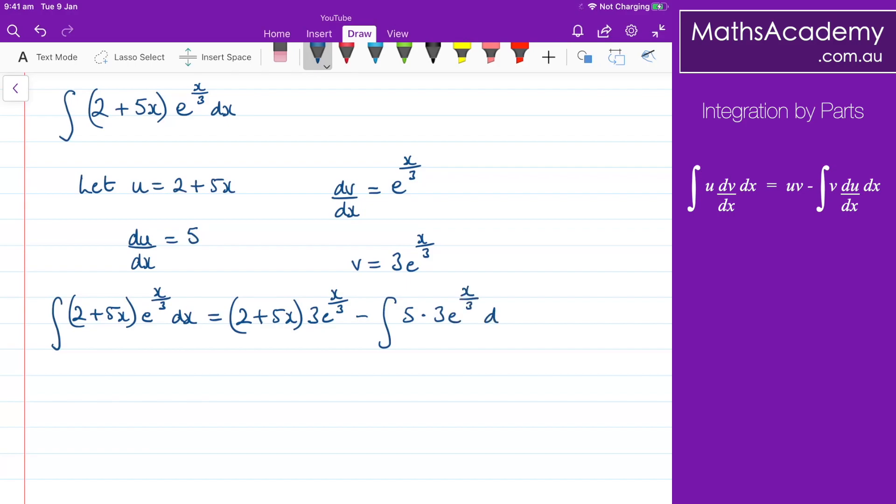So I've got (2 plus 5x)3e to the x over 3 minus, well, this 5 and 3 here will give me 15, so that's 15 times the integral of e to the x over 3. Well, the integral of e to the x over 3 is 3e to the x over 3, and I just need to add on that constant of integration there.